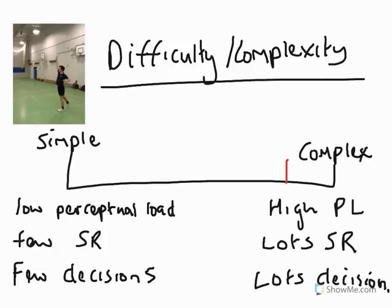A simple skill would be something along the lines of running — we don't have to perceive too many things, there aren't too many subroutines, and we don't have to make too many decisions.